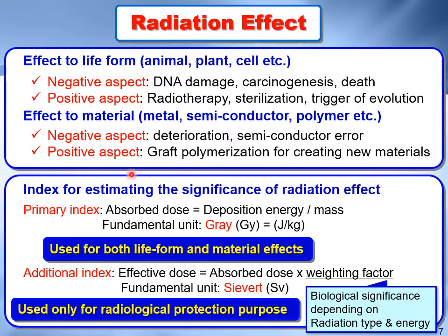The primary index for estimating the significance of radiation effects is the absorbed dose, which is the deposited energy per mass, and its fundamental unit is gray — one gray equals one joule per kilogram. The absorbed dose can be used for both life form and material effects. An additional index is the effective dose or equivalent dose, which is the absorbed dose multiplied by a weight factor depending on radiation type and energy. The fundamental unit of effective dose is sievert, and this index is used only for radiological protection purposes. In FITS, functions to calculate both absorbed dose and effective dose are implemented.